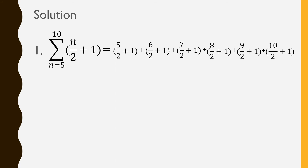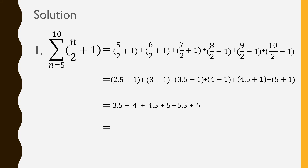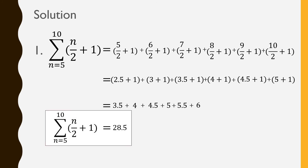Simplifying: 5 over 2 is 2.5, 6 divided by 2 is 3, 7 divided by 2 is 3.5, then 4, 4.5, and 5 — all plus 1. So we get: 2.5 plus 1 is 3.5; 3 plus 1 is 4; 3.5 plus 1 is 4.5; 4 plus 1 is 5; 4.5 plus 1 is 5.5; and 5 plus 1 is 6. These are our 6 add-ins: 3.5, 4, 4.5, 5, 5.5, and 6. Adding them all up gives 28.5, which is the value of the sum of n over 2 plus 1 as n goes from 5 up to 10.